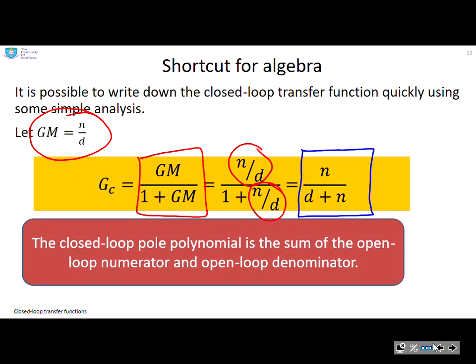So in other words, I can write down the closed loop transfer function by inspection, which avoids a lot of the messy algebra on the previous slides. The closed loop pole polynomial is just the sum of the open loop denominator and the open loop numerator.